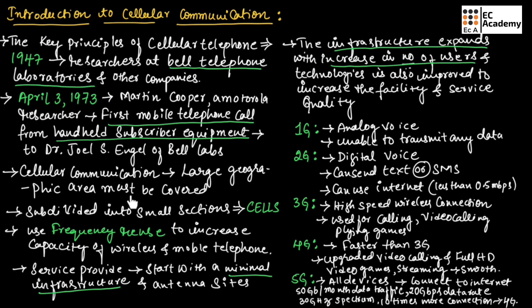For cellular communication, large geographical areas must be covered. This geographical area is subdivided into small sections which we call cells. You need to remember these words as this will be helpful for our discussion of future topics.